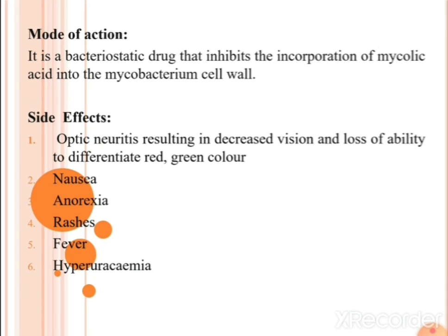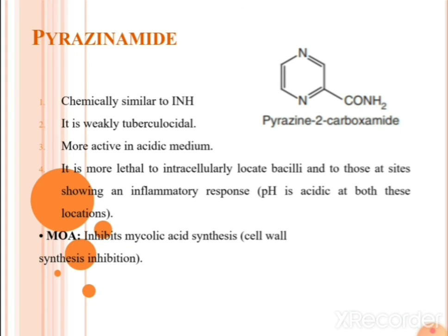Side effects of ethambutol include optic neuritis resulting in decreased vision and loss of ability to differentiate red and green colors, as well as nausea, anorexia, rashes, fever, and hyperuricemia. This is sufficient for today's session. In the next session we will discuss the further drugs in the syllabus. Until then, happy learning — thank you.